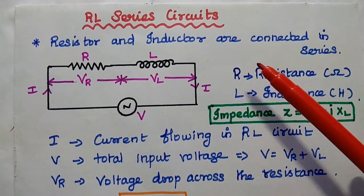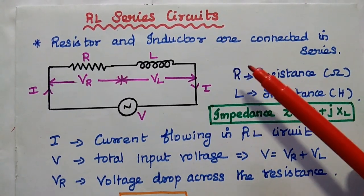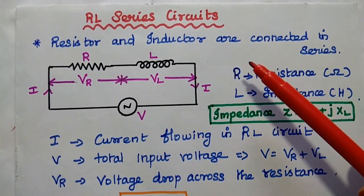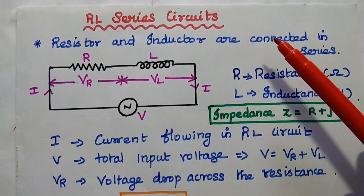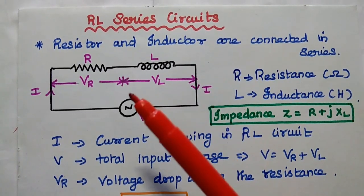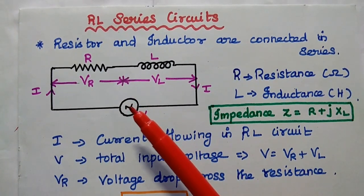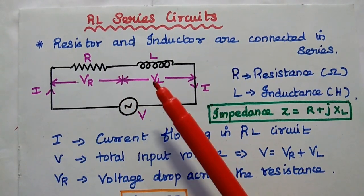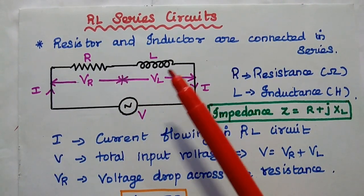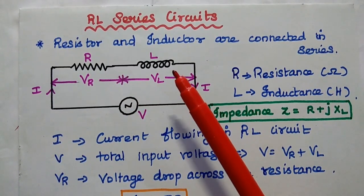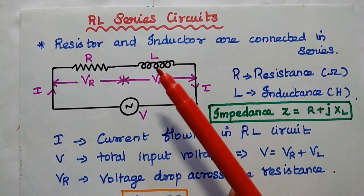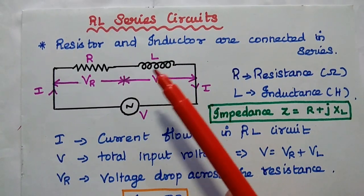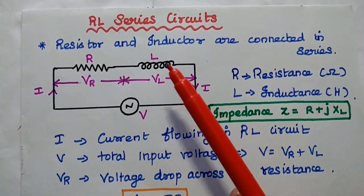Dear students, now we are going to discuss the RL series circuit in detail. It is an electric circuit which consists of a resistor in series with an inductor. Simply, the resistor and inductor both are connected in series.